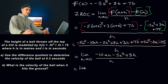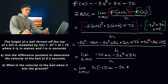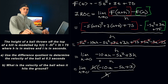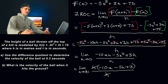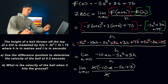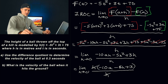We can't plug in zero for H yet — we need to factor out an H first. If we do that, the H in the numerator and denominator cancel out. Now that we've gotten rid of H in the denominator, we can plug in a very small value for H — in this case zero, because we want the exact velocity at any value of A. Negative 5 times zero goes away.